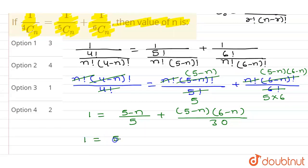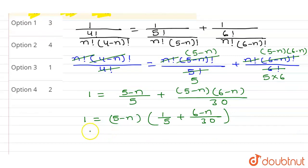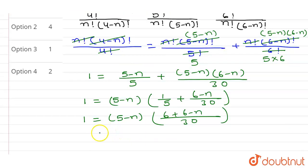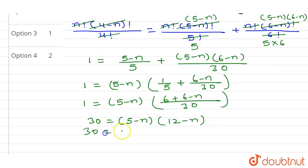I can write this as 1 equals (5 minus n) times the bracket 1/5 plus (6 minus n)/30. On simplifying, taking LCM as 30, I get 1 equals (5 minus n) into (6 plus 6 minus n) / 30, which is (5 minus n) into (12 minus n) / 30. After cross multiplication: 30 equals (5 minus n) into (12 minus n).